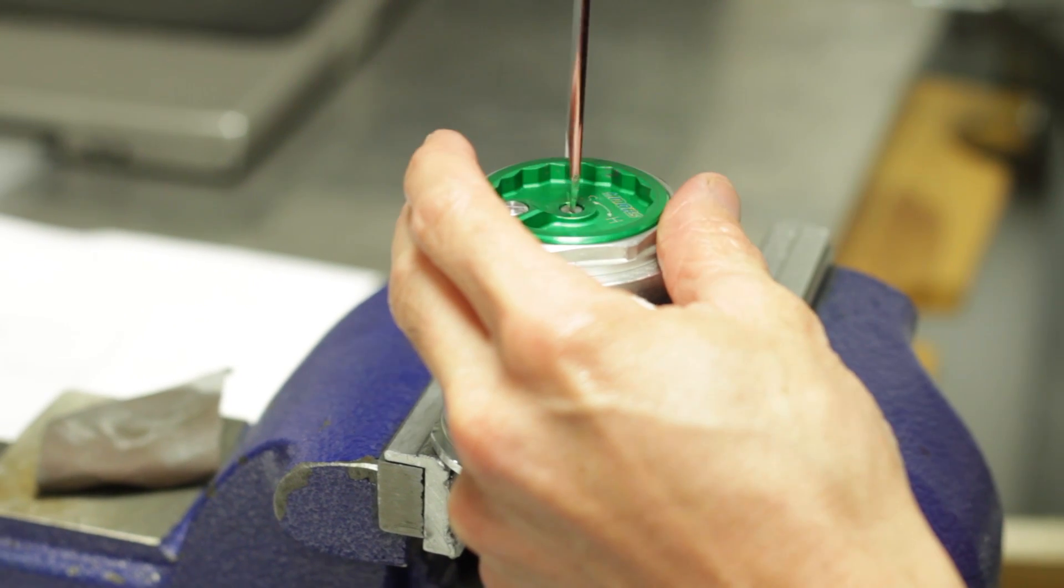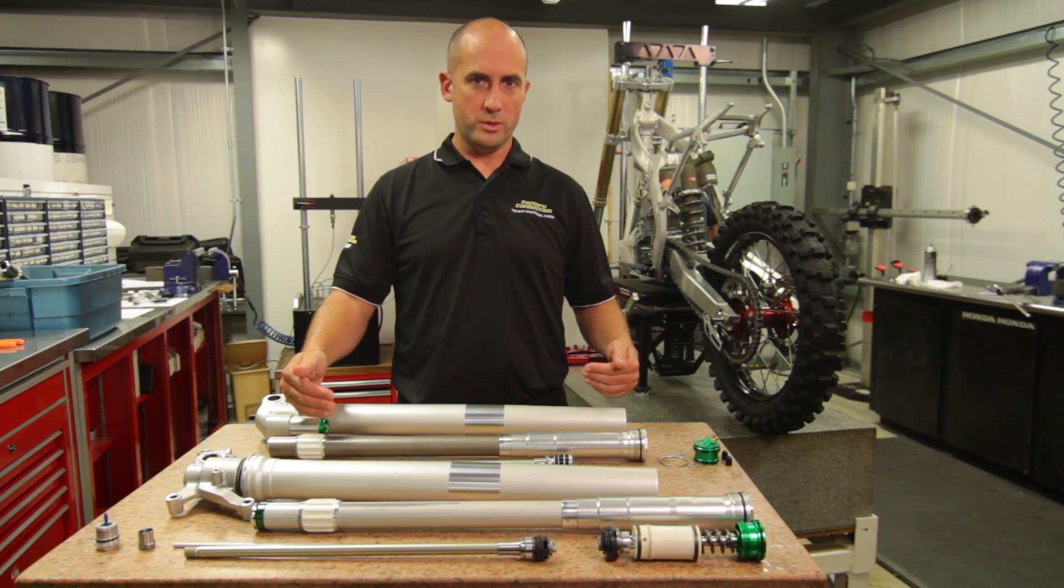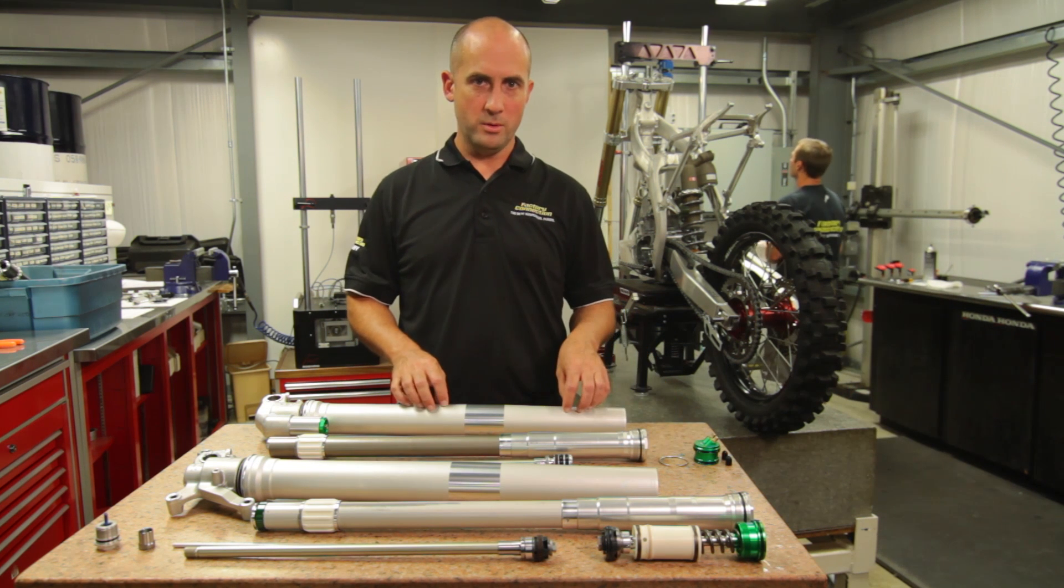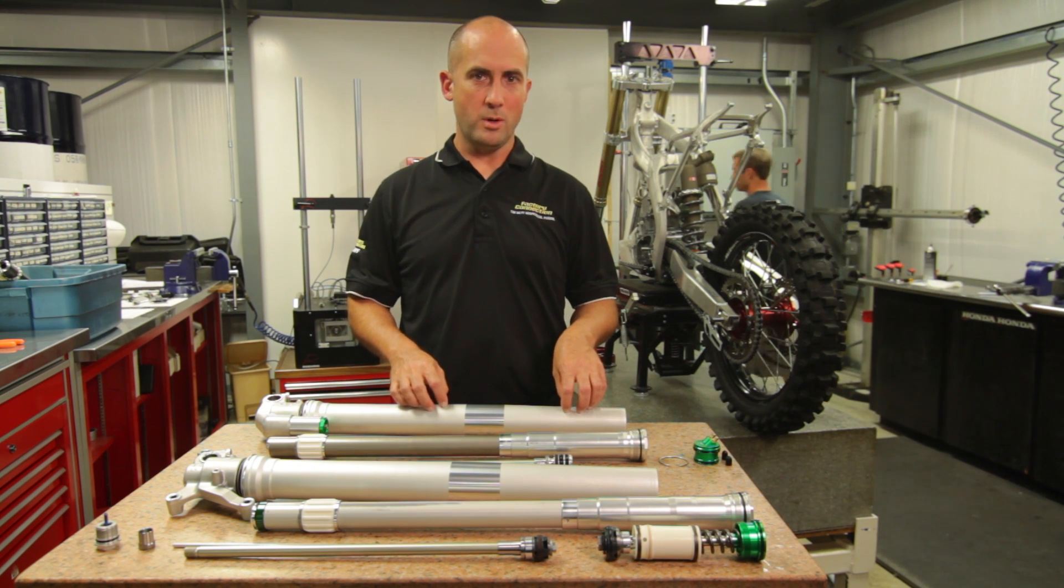If we look at the air side of the fork, which is the spring control, there's three separate chambers: an inner chamber, an outer chamber, and a negative chamber or balance chamber.